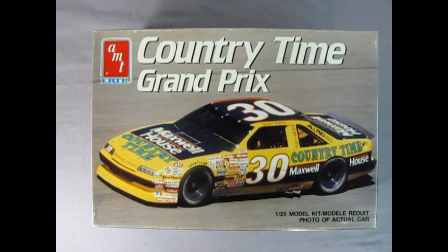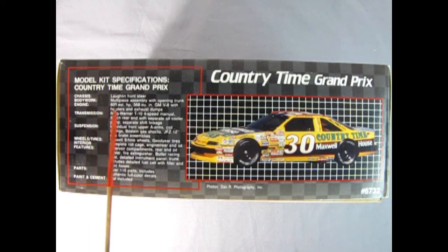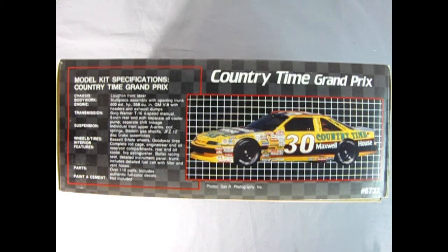This model kit is a 125th scale model and you'll need paint and glue to put it all together. On this side of the box we get the excellent model kit specifications for our Country Time Grand Prix and here we also get a nice side view of the car just so that we get our model kit right, and I will list this out in the comment section down below.